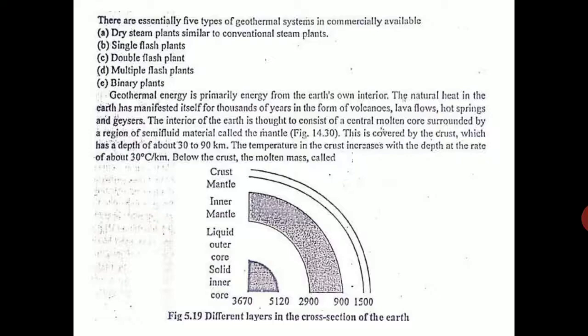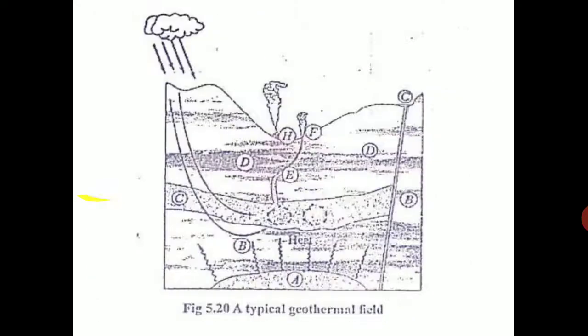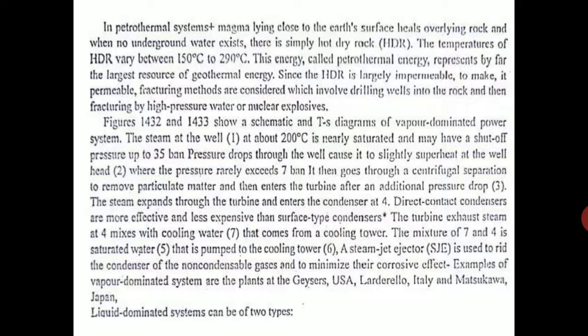These are known as binary plants. We have seen the geothermal field. The temperatures in the hot dry rock vary from 150 to 300 degrees Centigrade. That is the source of geothermal energy, the heat contained in the earth.